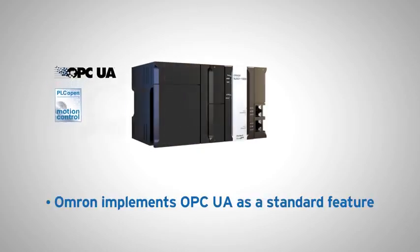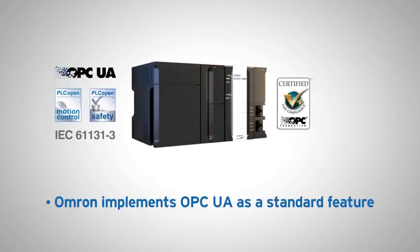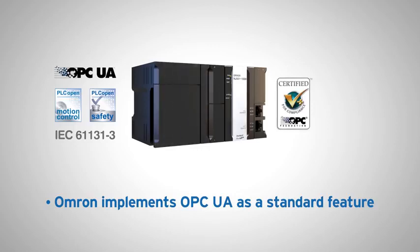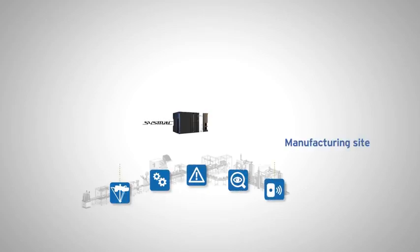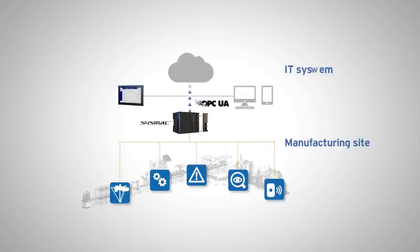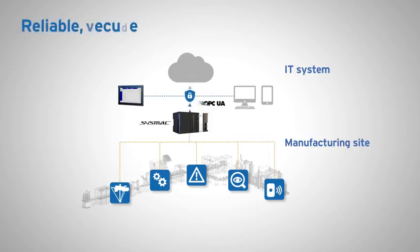Omron implements OPC UA as a standard feature, an information exchange standard for industrial communication. NJ5 with OPC UA provides open and direct communication between machine and IT systems. This solution ensures reliable, secure and easy communication.